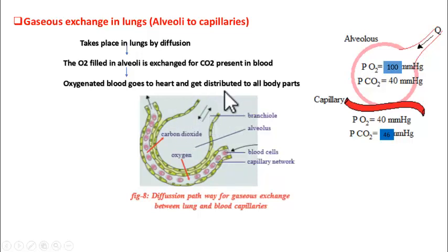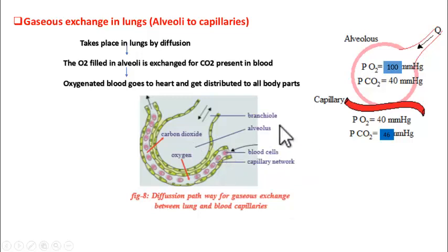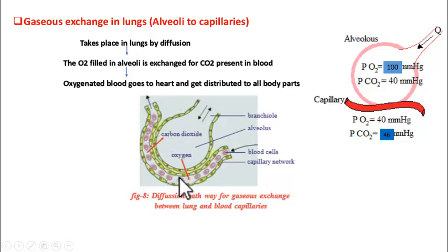When you inhale air, the lungs — meaning the alveoli — are filled with air. During inhalation, the alveoli are filled with air containing oxygen, carbon dioxide, nitrogen, and many other gases. The capillary is coming from the tissues. These tissues are continuously respiring and producing carbon dioxide, and that carbon dioxide is brought to the lung surface, or alveolar surface. So this blood is rich with carbon dioxide.